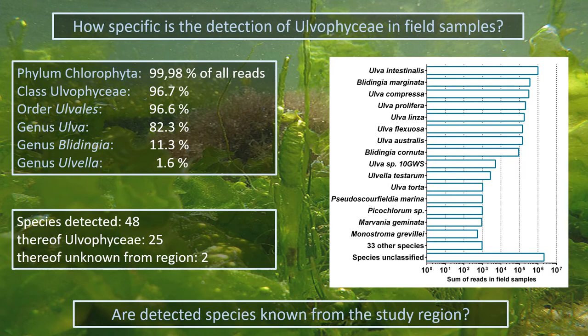Only two species were detected that have not been recorded in the region yet. One of them, Ulva mediterranea, was detected extremely rarely and may be a false positive record. However, the second, Ulva SP10GWS, was detected repeatedly at certain sites. Ulva SP10GWS is an undescribed species that was so far only detected in Atlantic Canada and Tasmania, and it may now have reached Germany.